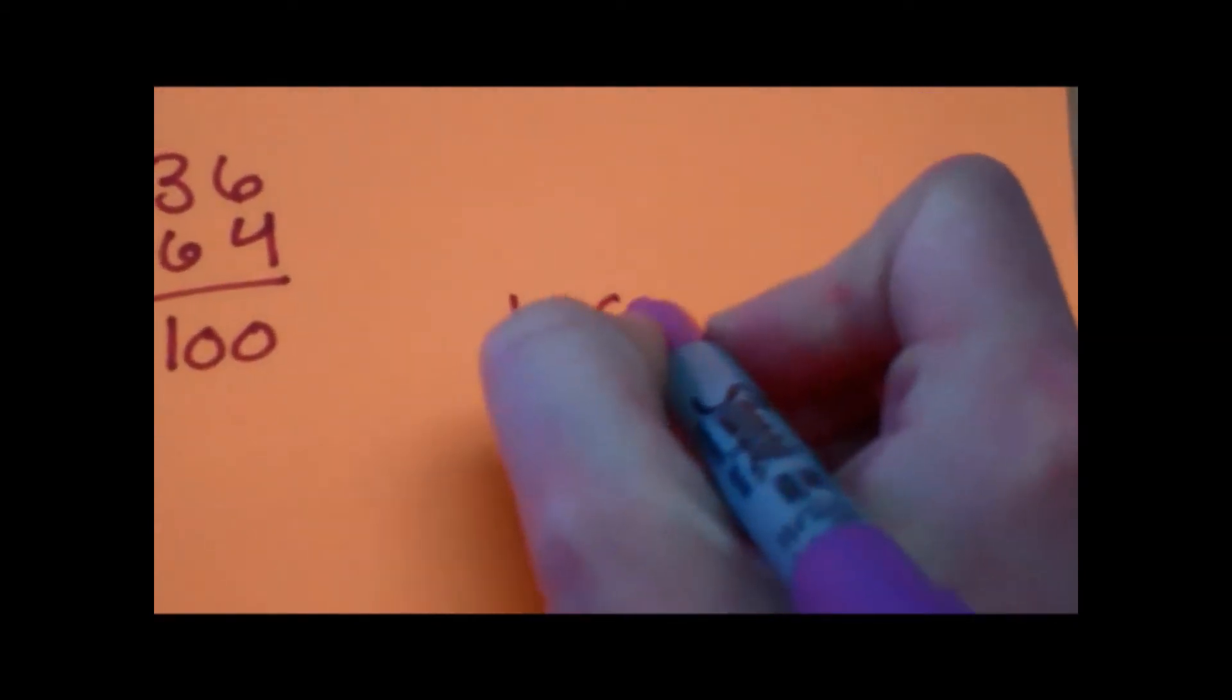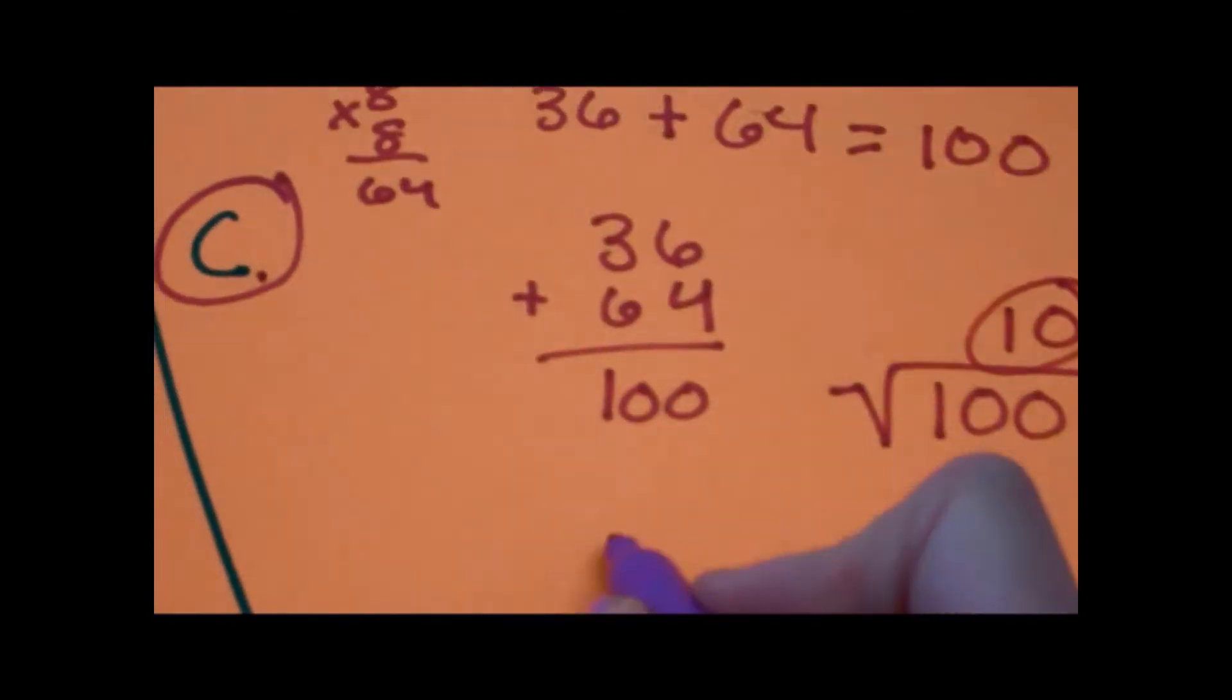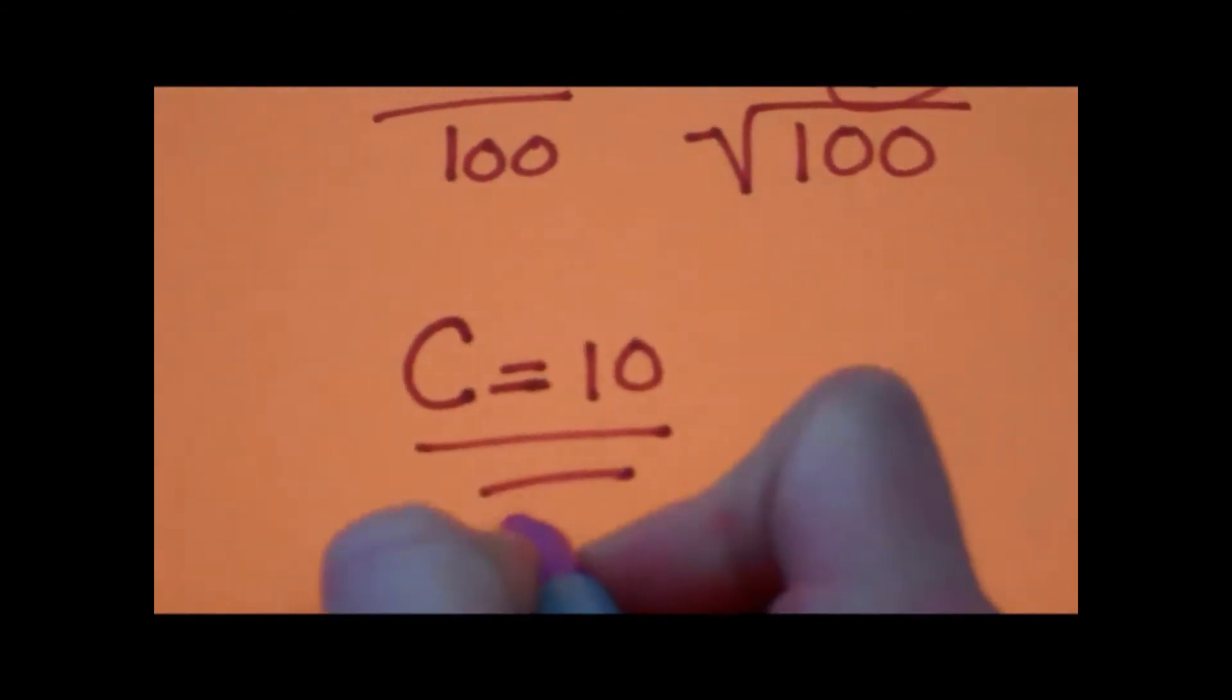The square root of 100 is 10, which is your answer. So C equals 10, which is the hypotenuse.